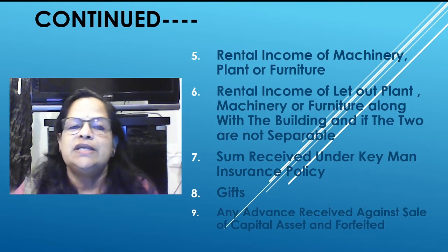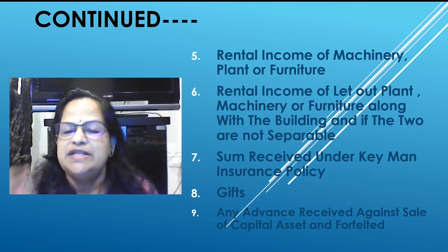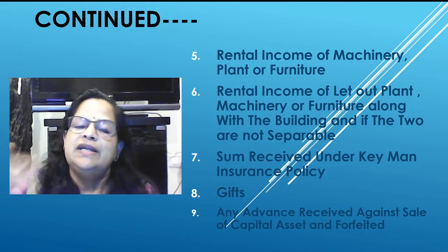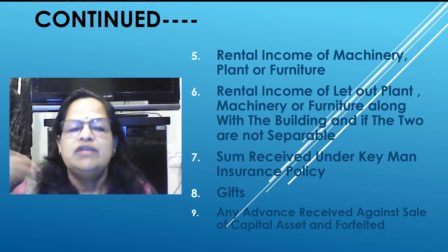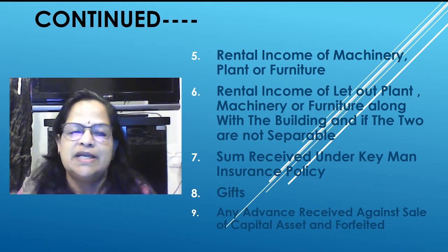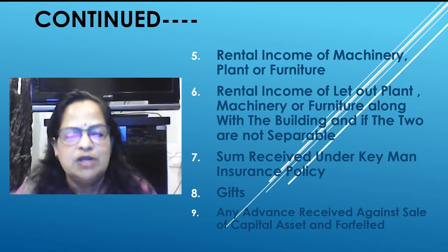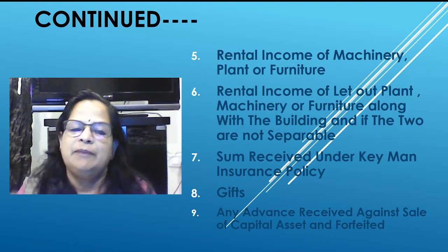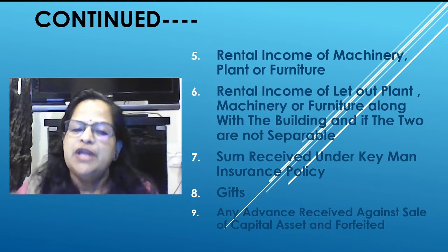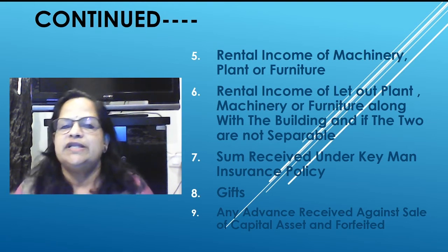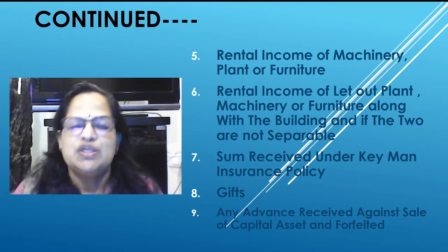Gifts from relatives are exempted. Gifts of more than 50,000 rupees will be taxable under this head — I will explain the details of which gifts are taxable separately. Also, any advance received against the sale of a capital asset that is subsequently forfeited is included — I have explained this in the capital gains chapter as well.